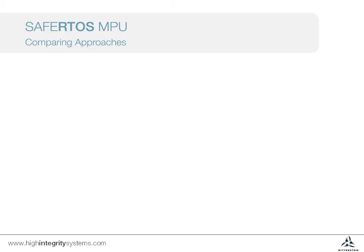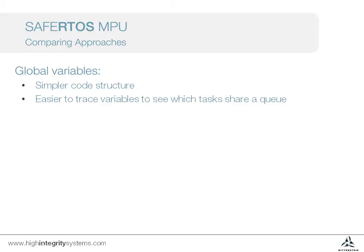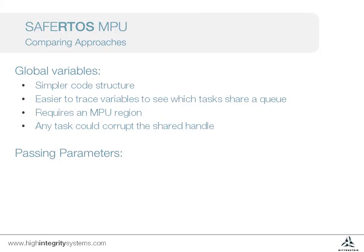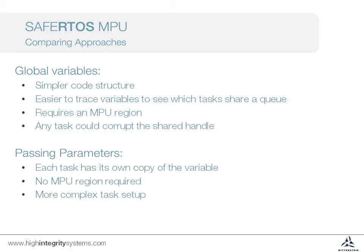We've considered two approaches to allowing two tasks to share access to a queue. Comparing these approaches, the global variable approach has a simpler code structure and is easier to trace through the code to see which tasks share a queue, as they have to access it by the same variable name. However, it requires an MPU region and any one task could corrupt the shared queue handle. Passing parameters into each task means each task has its own copy of the variable, and no MPU region is required as no global data is accessed. The downside is that the task setup is more complex, the order of task and queue creation is important, and it can make it harder to trace which tasks access a particular queue.